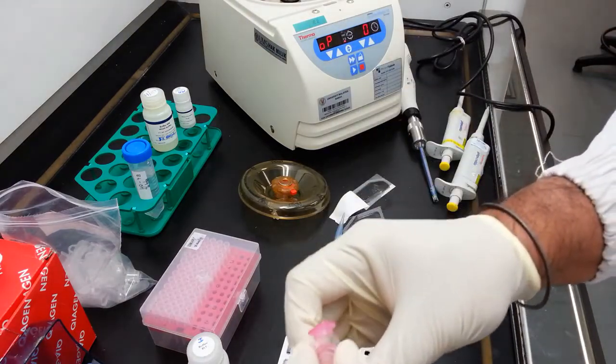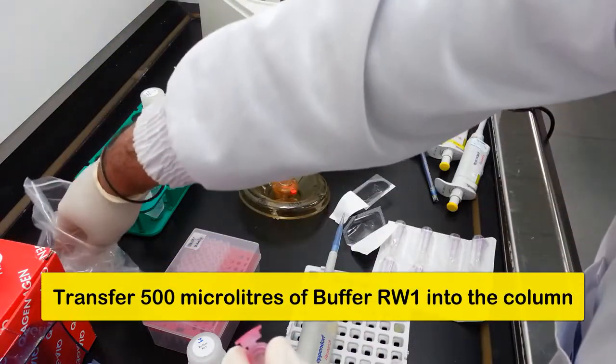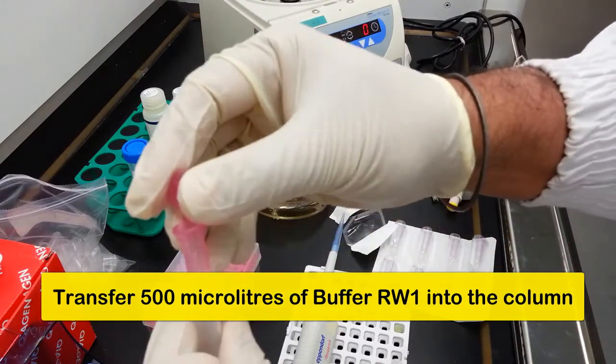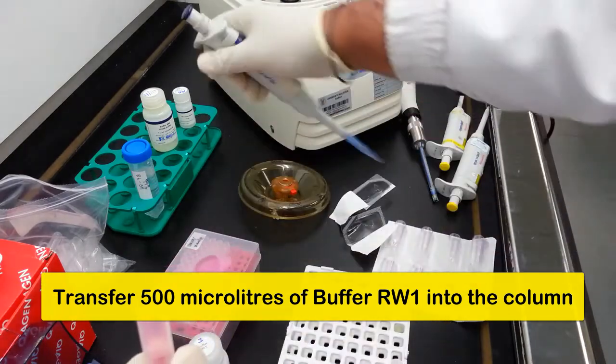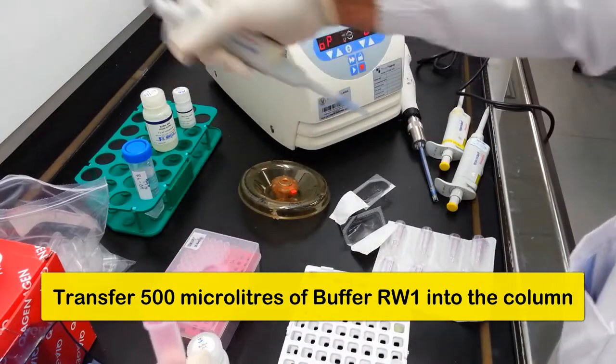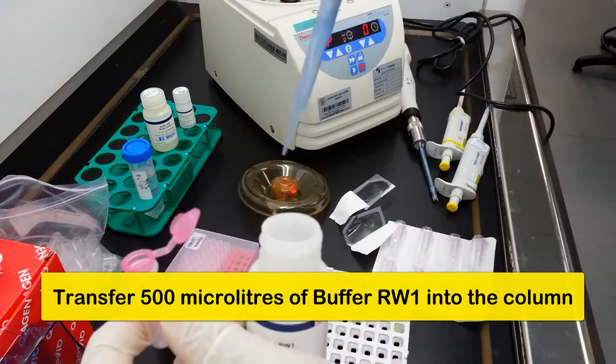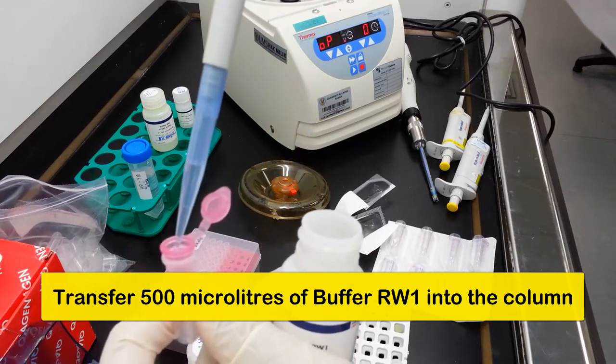Repeat this procedure. Here you have a fresh collection tube, insert the tube containing your RNA sample into the collection tube. Add 500 microliters of buffer RW1 into the upper section.